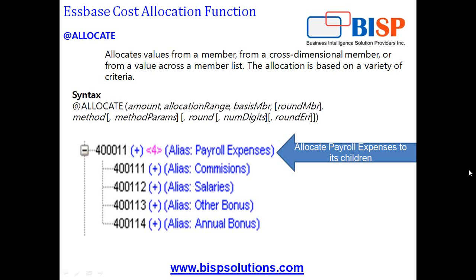Before we do it in a space, I like to give you a basic example of how allocation works. We will talk about three kinds of allocation: proportional, linear, and percent-based allocation.